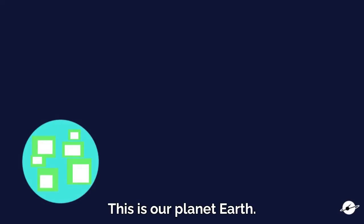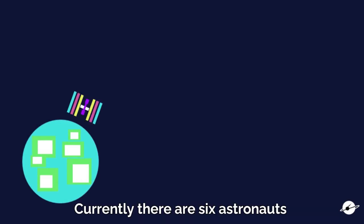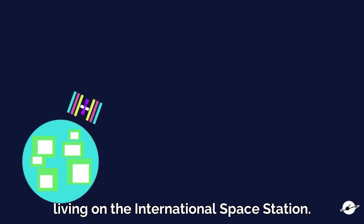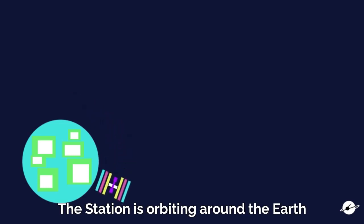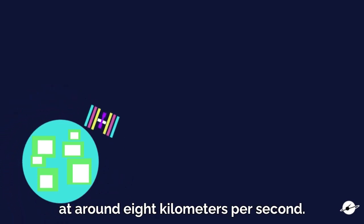This is our planet Earth, home to billions of people. Well, except for six. Currently, there are six astronauts living on the International Space Station. The station is orbiting around the Earth at around 8 km per second, which is really, really fast.